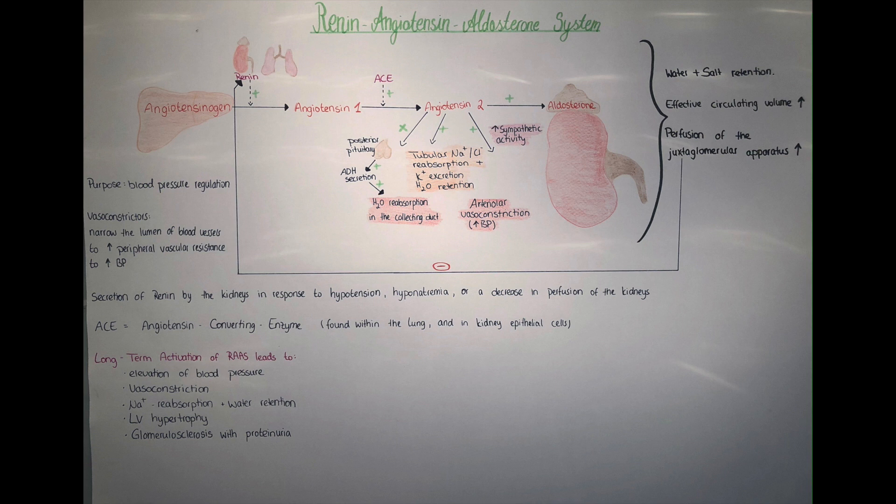Angiotensin-2 also stimulates the release of catecholamines and promotes cardiac remodeling. This is important because excess stimulation of the RAAS system can lead to left ventricular hypertrophy, where the wall of the heart thickens.